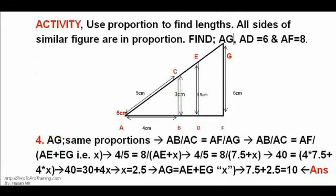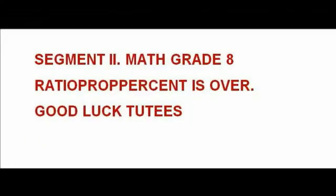Activity 4. Use proportions to find lengths. All sides of similar figures are in proportion. AB to AC is F to AG. F equals 8 found in the last slide. Solving leads to AG equals 10. Answer.